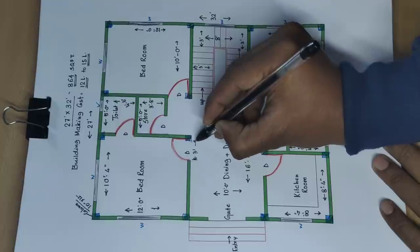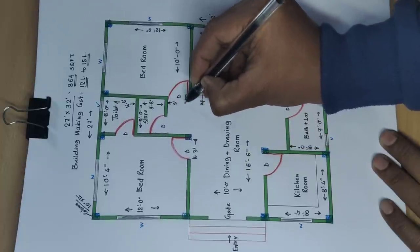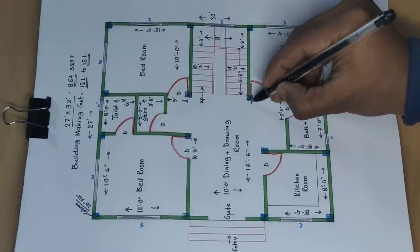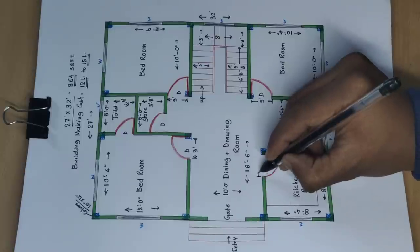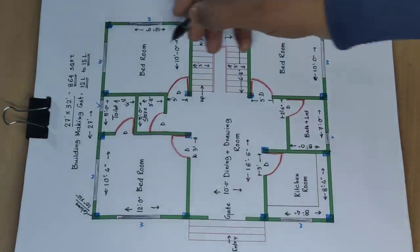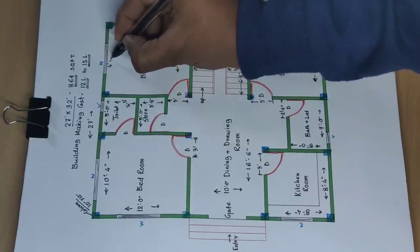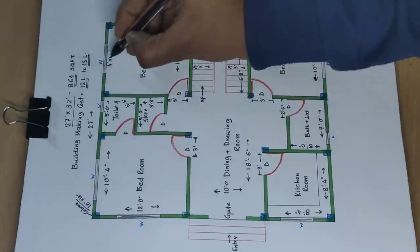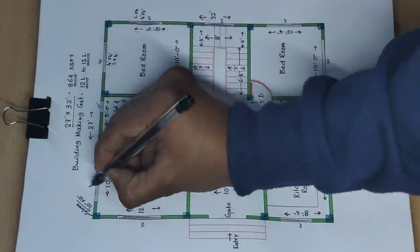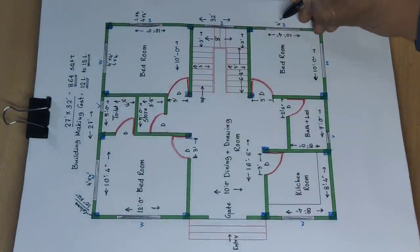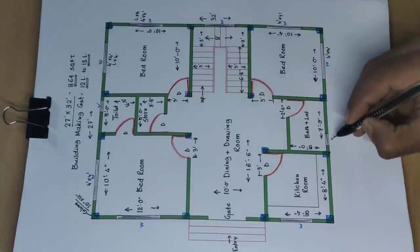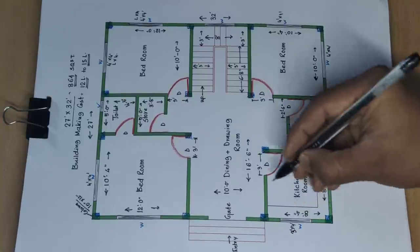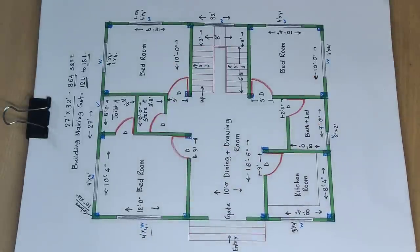Door size is 3 feet wide throughout. Window size is 4 feet by 4 feet — length by height. Some windows are 4 feet by 4 feet, some 2 feet by 2 feet, and some 3 feet by 4 feet. Thank you for watching this video.